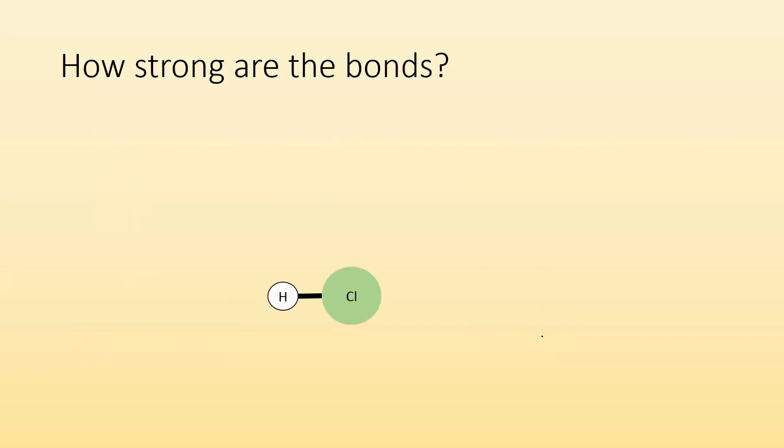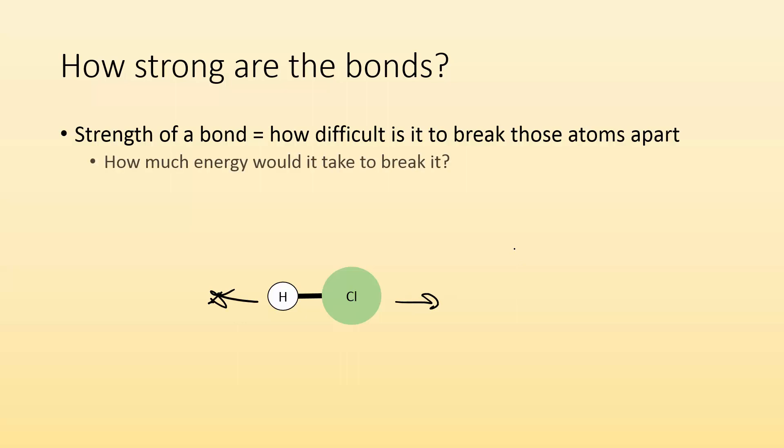So how strong are these bonds then? Well, the strength of a bond is pretty much just talking about how difficult it is to break those atoms apart. So how difficult would it be to rip this hydrogen away from this chlorine? That's what we're talking about when we're talking about bond strength. So how much energy do we got to invest to separate those two things? Think about having two magnets stuck together or if something was glued together, how much energy you're going to have to put in to break it apart.